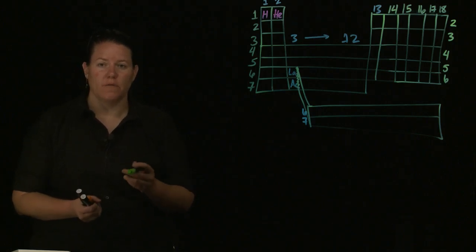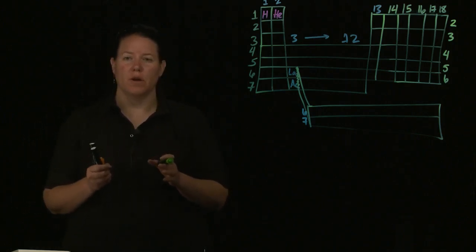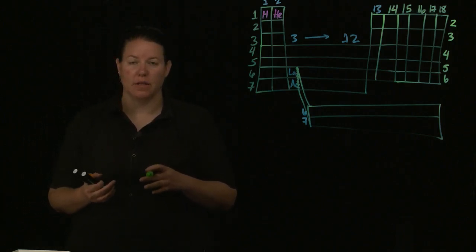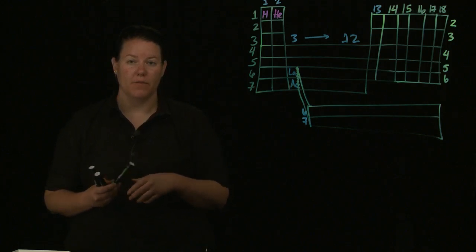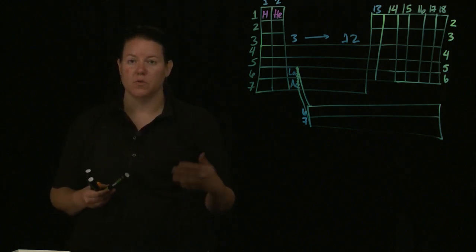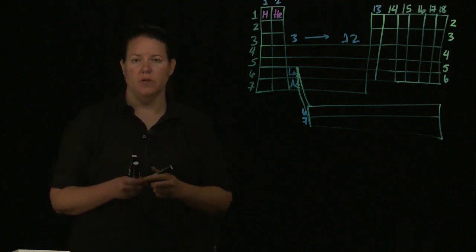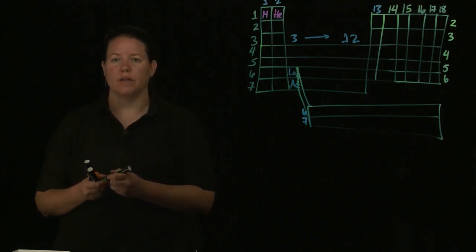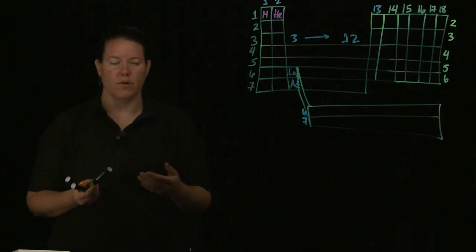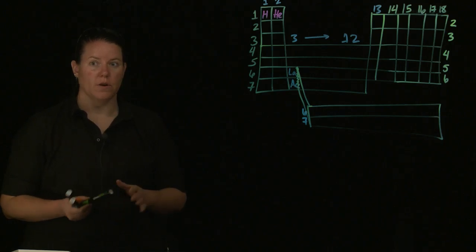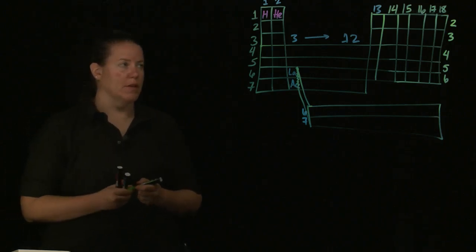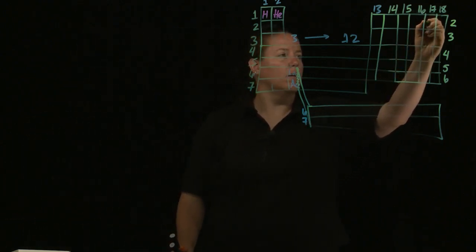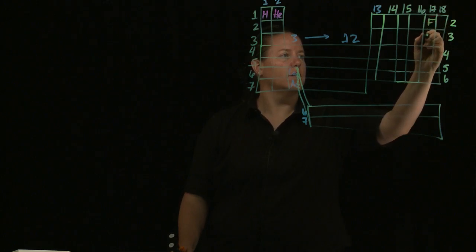So a lot of folks do what we call the collapsed or condensed electron configuration. And even further than that, a lot of folks do the noble gas notation of that condensed or collapsed configuration. So if we were looking at something particularly like, let's see, there's chlorine right here, let's do chlorine.